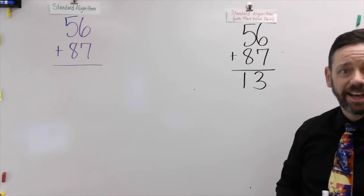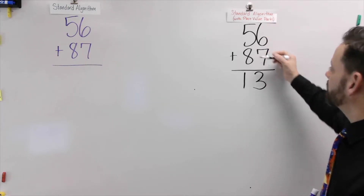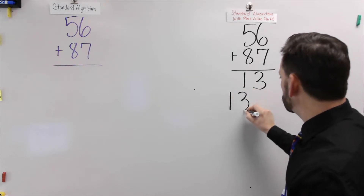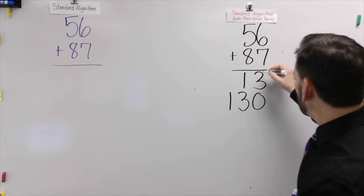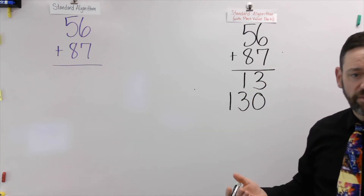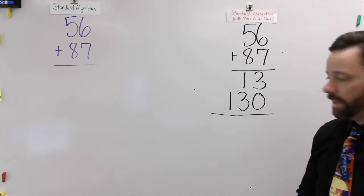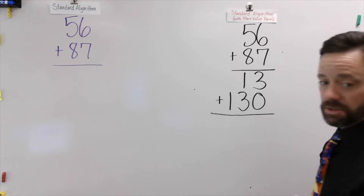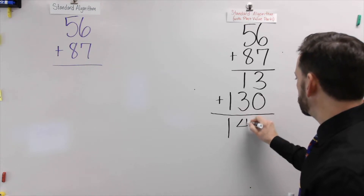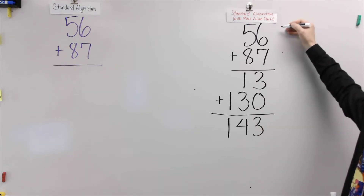The next thing I'm going to do is add the tens together. So 50 plus 80 is 130. I'm going to write that whole number, keeping place value position in line — the ones, the tens, and the hundreds. Now that I have the two parts, I'm going to draw a line and add those together. I can do this in any order. There's no regrouping here, so I have 143. That's the standard algorithm with place value parts.